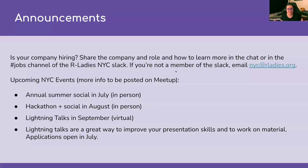R-Ladies NYC has a couple of events coming up this summer. We have our annual summer social, which is going to be in July and that's in person. We'll also be doing a hackathon of sorts — another opportunity to socialize — in August, also in person. And then we'll be holding our annual Lightning Talks in September, which will be fully virtual. Lightning Talks are a great way to improve your presentation skills, and applications are open to everybody no matter what your experience level is with R. Those applications will open up in July as well.